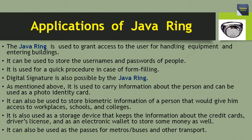The Java Ring is used to grant access to the user for handling equipment and entering buildings. It can be used to store usernames and passwords of people. It is used for a quick procedure in case of form filling. Digital signatures are also possible by the Java Ring. It is used to carry information about the person and can be used as a photo identity card.